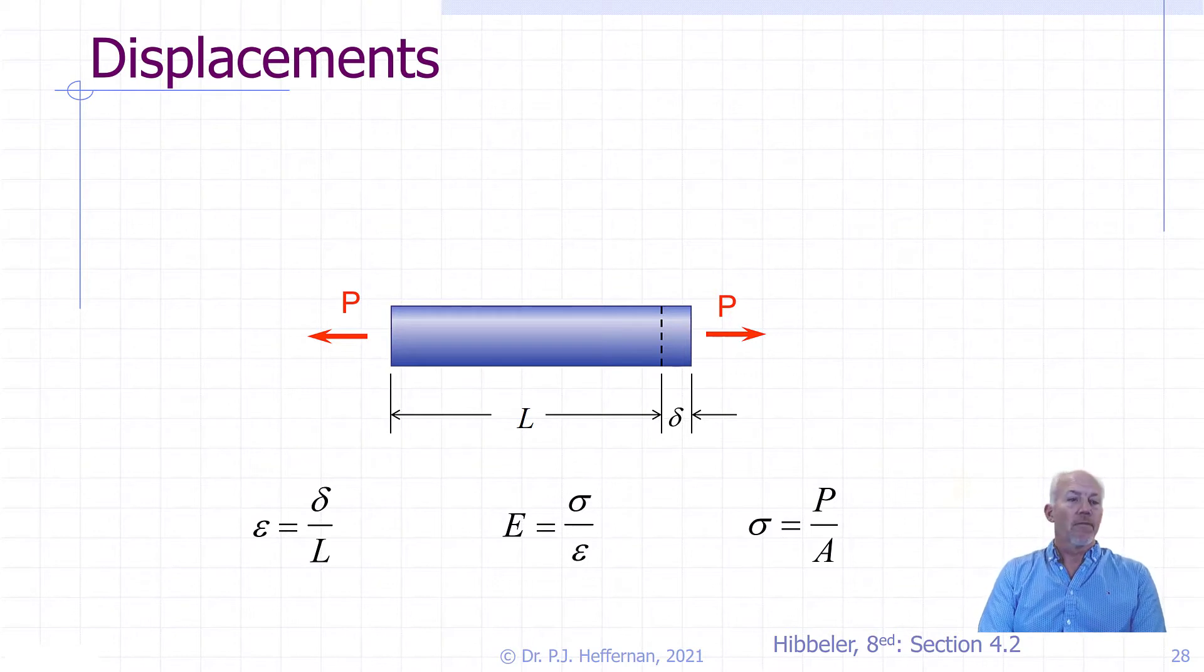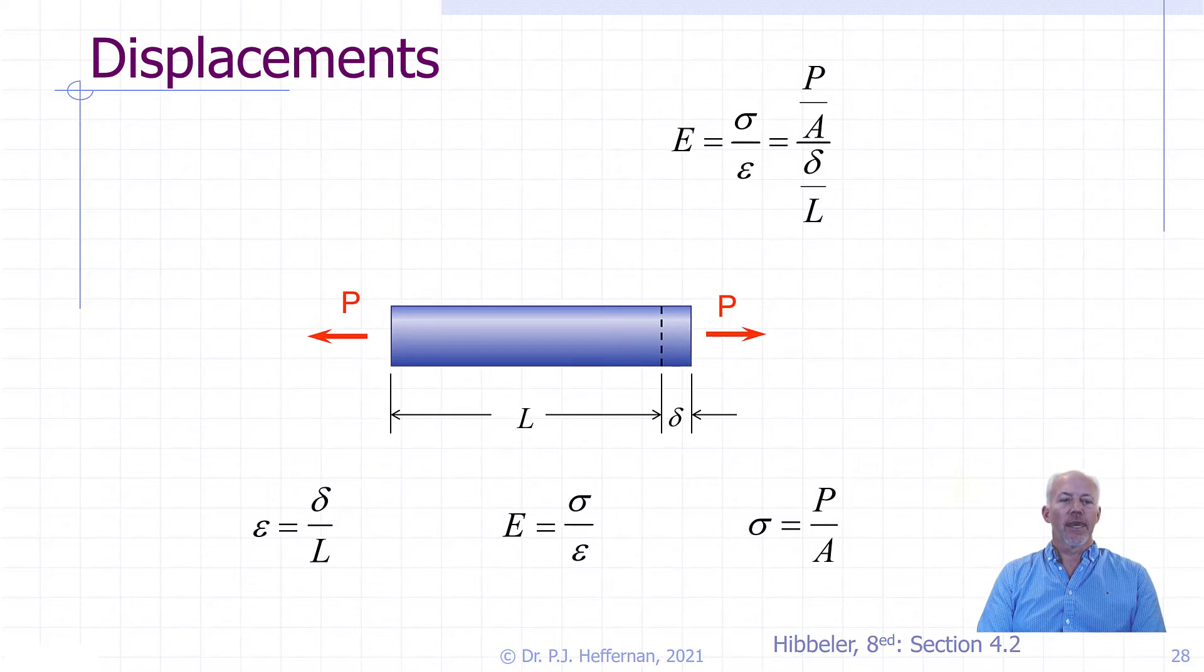And we have Hooke's Law, which is the relationship between stress and strain, i.e. the Young's modulus E is equal to stress divided by strain. Now let's combine these by substituting in the equations for stress and strain into Hooke's Law and rearranging the equation to solve for displacement.